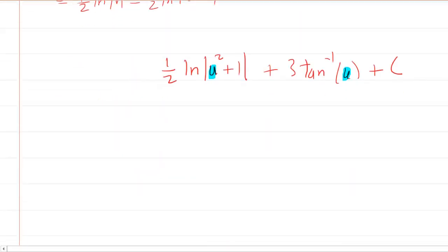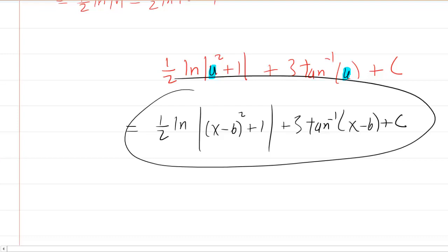So in fact, the last step is to go back and to rewrite the problem in terms of x. So we'll have x minus six squared plus one for that u. And then for this u, same thing, we'll replace it with x minus six. And so here is the final answer.